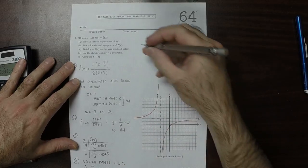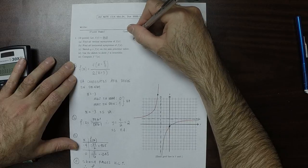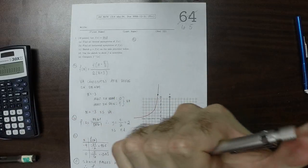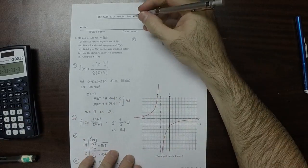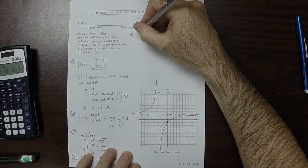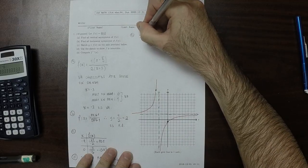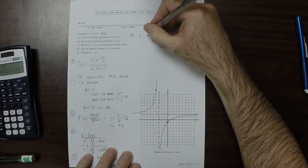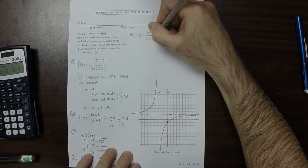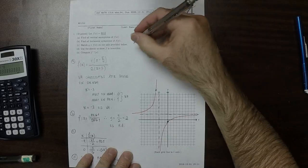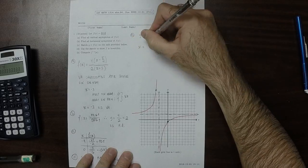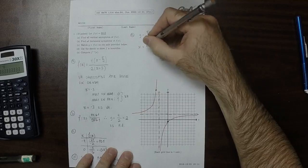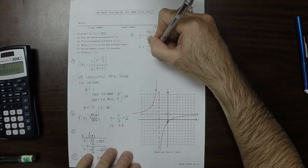And so E, let's compute the inverse function. So I'll write y is 4x minus 5 over 2x plus 6. So now I'll swap x's and y's. X is 4y minus 5 over 2y plus 6.